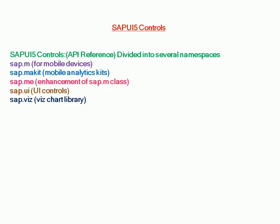SAPUI5 controls are divided into several namespaces. As we have seen, we can refer to the API reference on the website. For example, sap.m is for mobile devices, sap.ui is for UI controls, and so on.